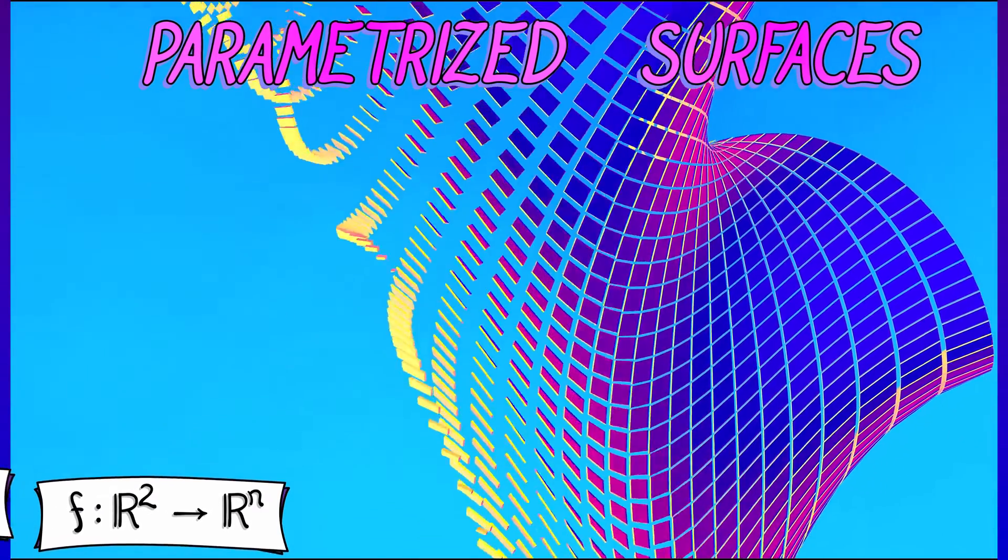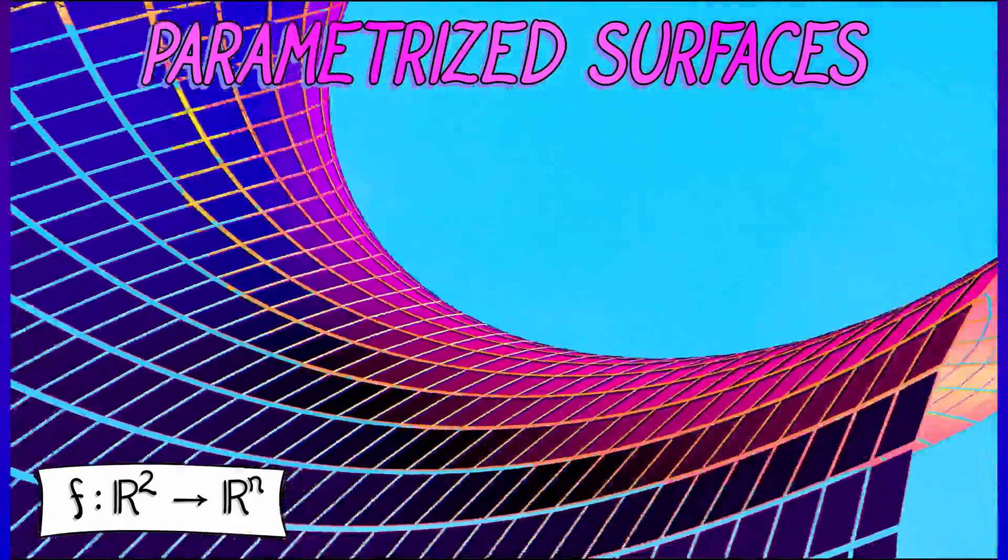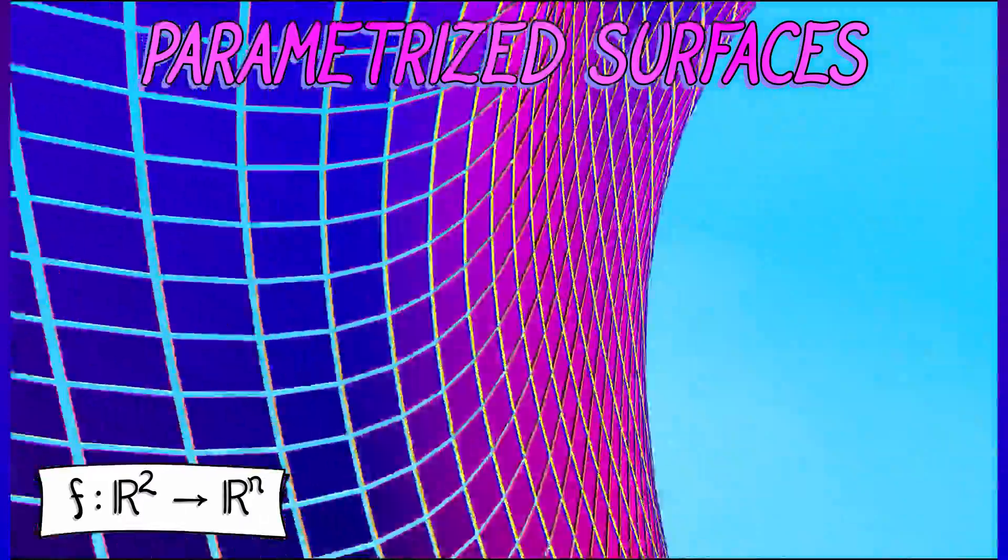What about parametrized surfaces? Same thing, just now you've got two inputs. And you can really see those, you can draw pictures of that.